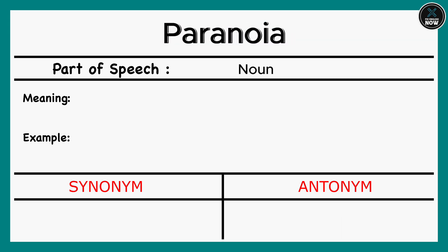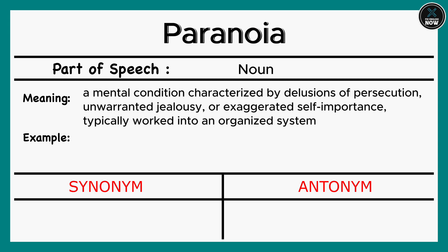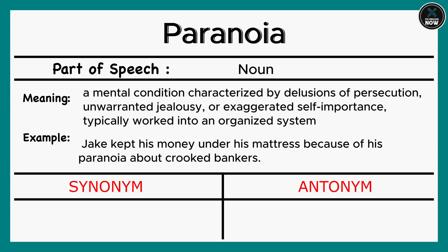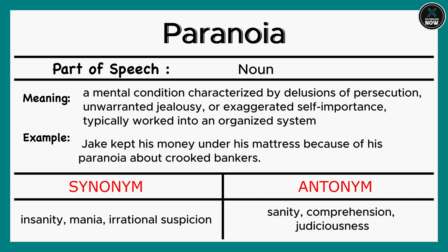Paranoia: A mental condition characterized by delusions of persecution, unwarranted jealousy, or exaggerated self-importance, typically worked into an organized system. Example: Jake kept his money under his mattress because of his paranoia about crooked bankers. Synonyms: Insanity, Mania, Irrational suspicion. Antonyms: Sanity, Comprehension, Judiciousness.